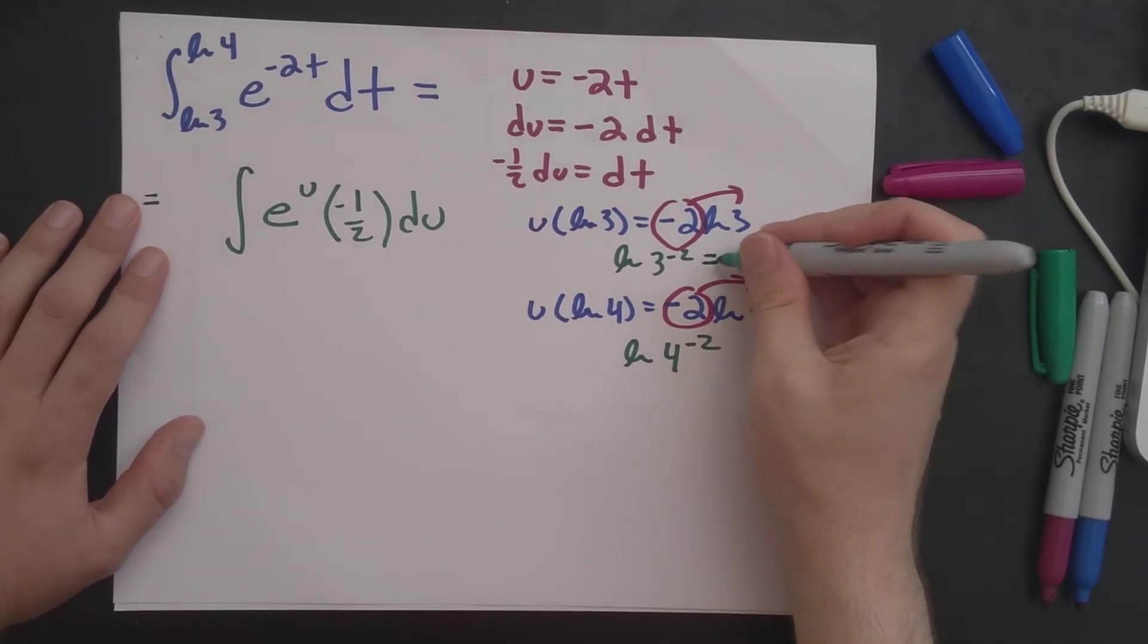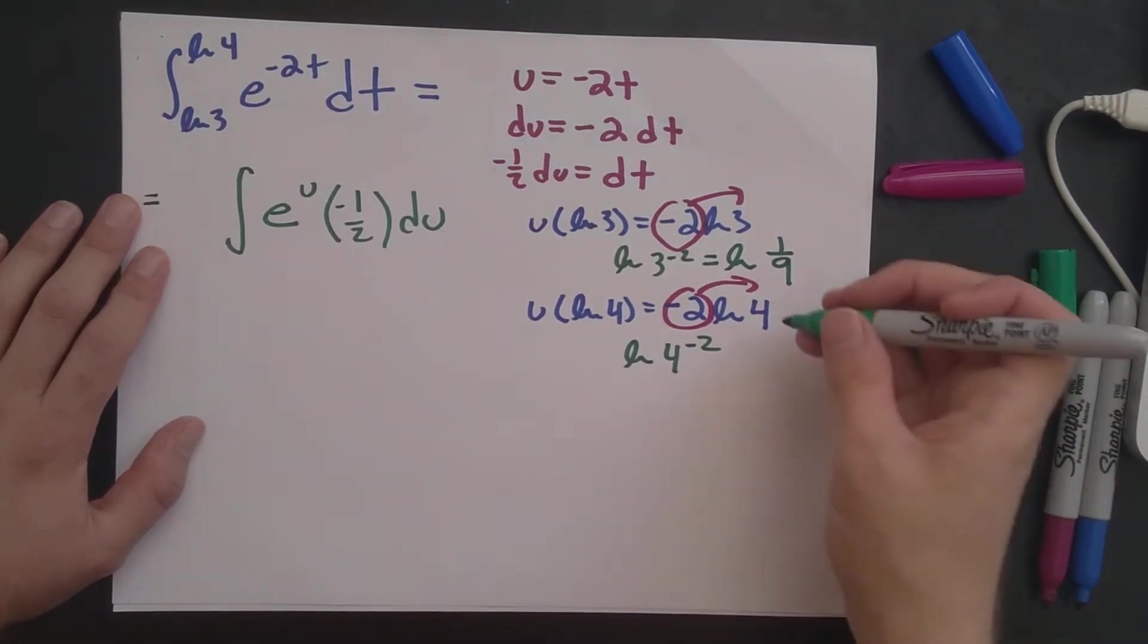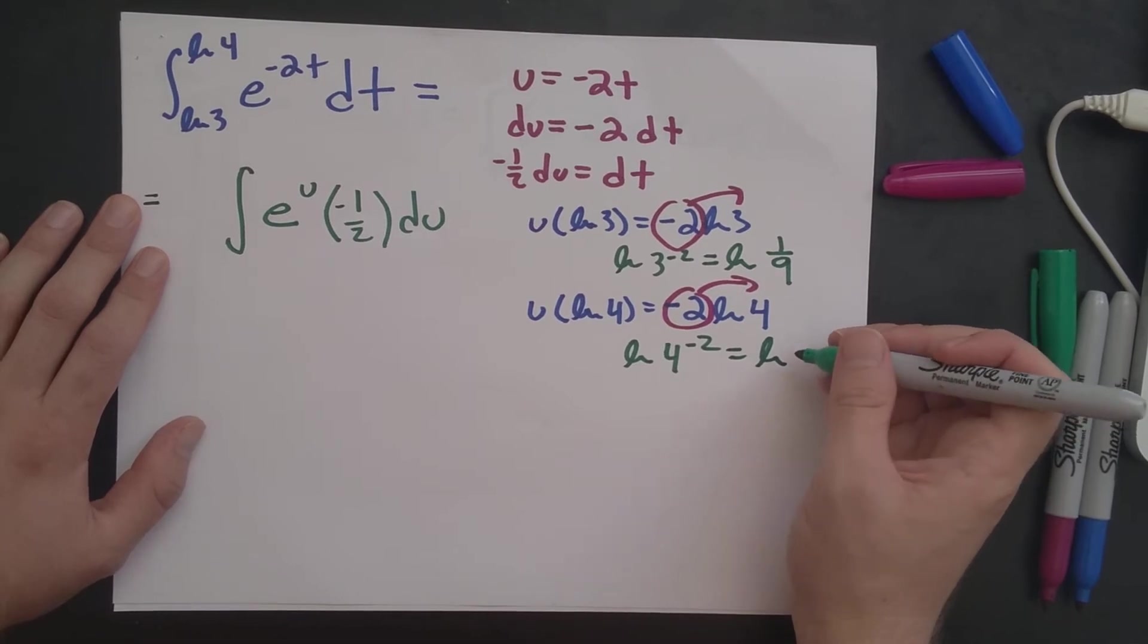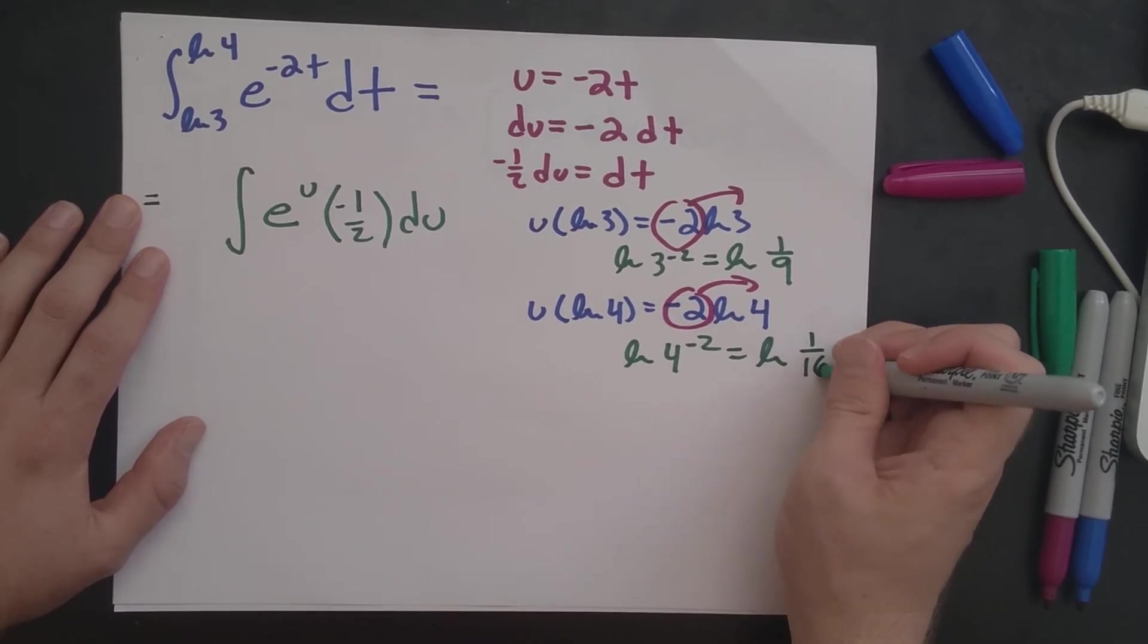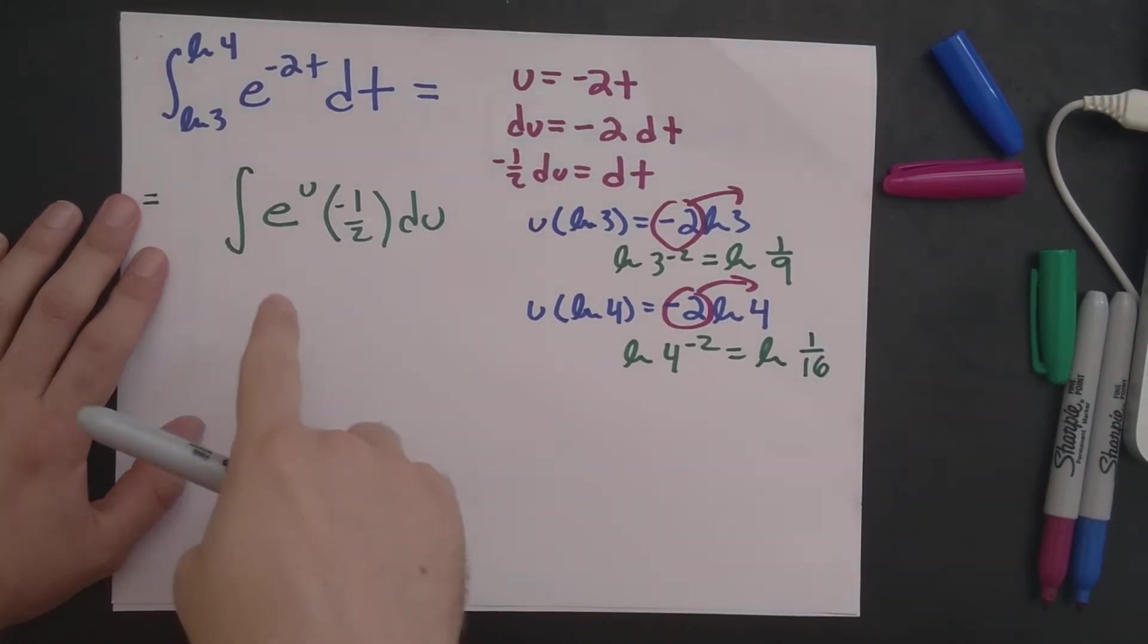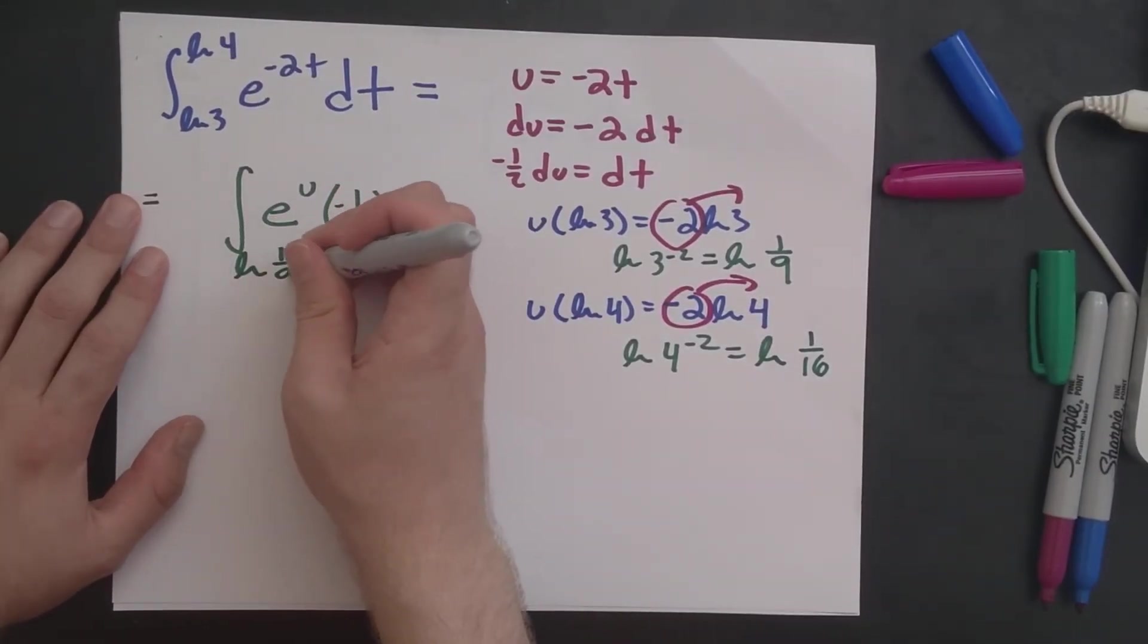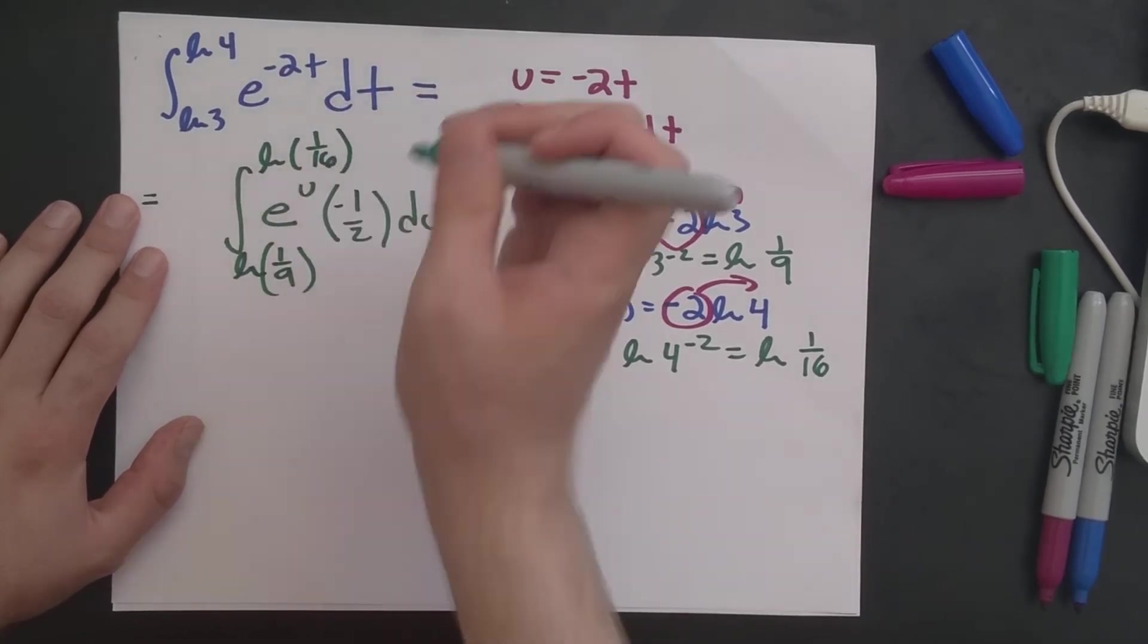And properties of logs tell us, so 3 to the minus 2 power is 1 ninth, and 4 raised to the minus 2 power is 1 over 16. And so bringing this all back over here, this lower bound is log of 1 ninth, and this upper bound is log of 1 over 16.